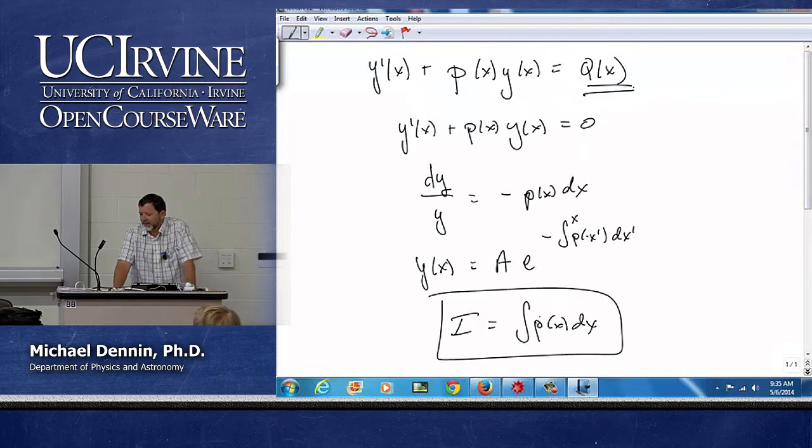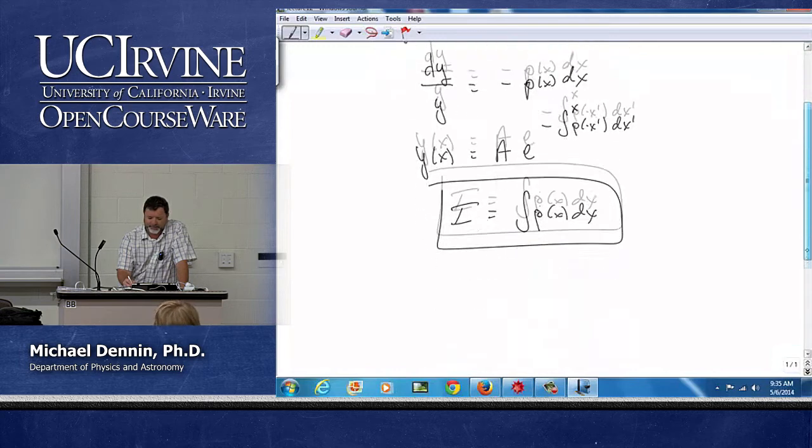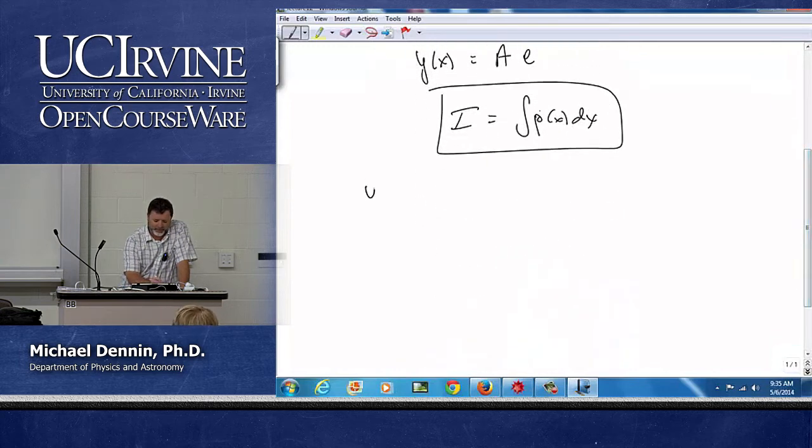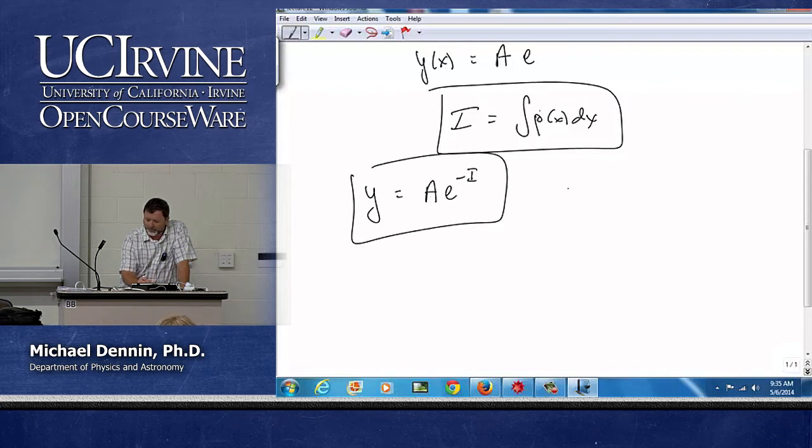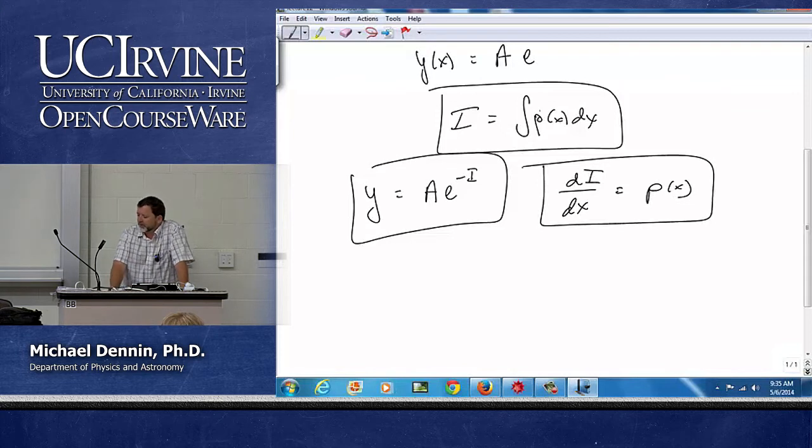where I have a q of x on the right-hand side, there's a few steps to putting this together. Let's keep in mind we're going to write y as A e to the minus i. i is defined up there. And our third piece is to just keep in mind, therefore, that di dx, by definition, is p of x. So these are our three building blocks.